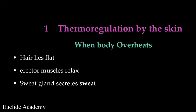When the body overheats, the hair on your skin will lie flat — it falls down and won't stand erect. The erector muscles relax, and the sweat glands are going to secrete sweat. That sweat comes on top of your skin and cools down the body as it evaporates into the atmosphere.